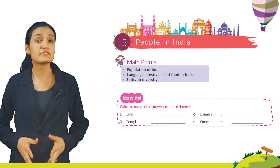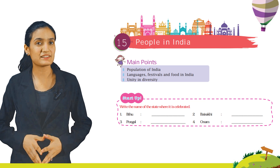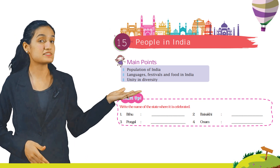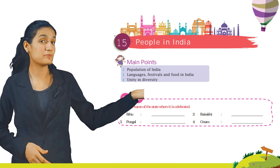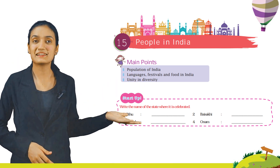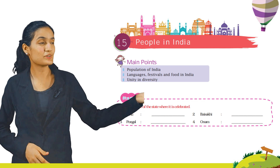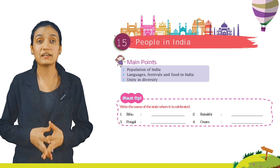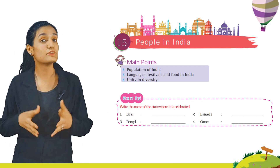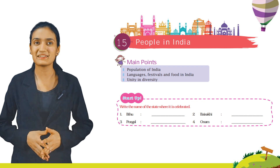Write the name of the states where the following festivals are celebrated. First, Bihu. Second, Baisakhi. Third, Pongal. Fourth, Onam. You have to write the states where these festivals are celebrated.